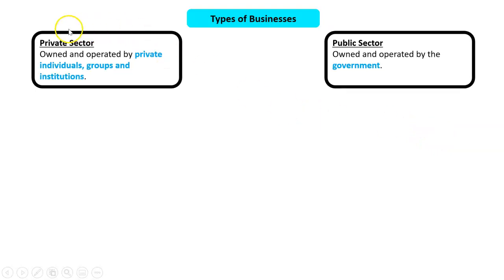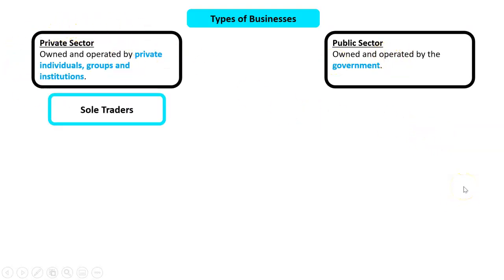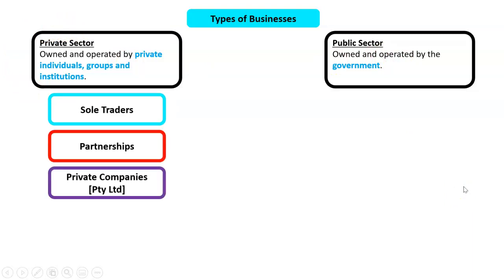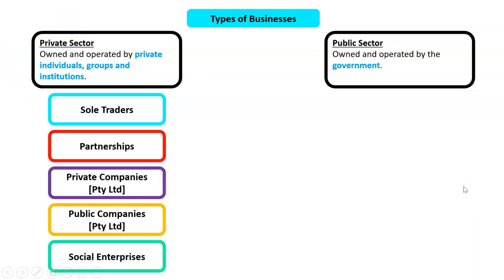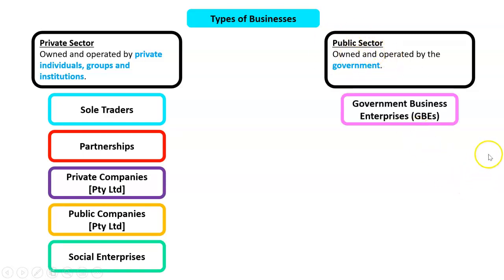Overall, the types of businesses in the Australian economy include: in the private sector — sole traders, partnerships, private companies, public companies, and social enterprises; and in the public sector — there is only one type, called a government business enterprise.